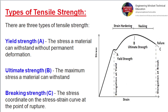Types of tensile strength: There are three types. Yield strength — the stress a material can withstand without permanent deformation. Ultimate strength — the maximum stress a material can withstand. Breaking strength — the stress coordinate on the stress-strain curve at the point of rupture.